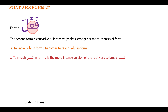Today we'll be looking at Arabic verb Form 2. We'll do a conjugation and a couple of examples. First and foremost, we have to understand what Form 2 is. Form 2 is conjugated or made from Form 1 by doubling the middle letter.